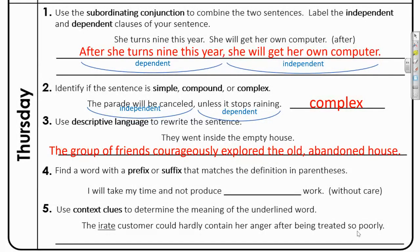Number four: find a word with a prefix or suffix that matches the definition in parentheses. 'I will take my time and not produce blank work.' The definition is 'without care.' What's a word that means without care? We like you to be full of care, or careful. But if you're without care, that's being careless. So: 'I will take my time and not produce careless work.' That's the goal that all of us have for you.